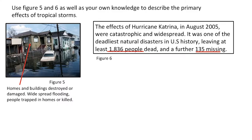Let's take a look at another question: 'Use figures 5 and 6 as well as your own knowledge to describe the primary effects of tropical storms.' Again, I've got a picture and in that picture I can see homes and buildings have been destroyed or damaged, there's widespread flooding, and people will be trapped in homes or killed. The article states the effects of Hurricane Katrina in August 2005 were catastrophic and widespread. It was one of the deadliest natural disasters in US history, leaving at least 1,836 people dead and a further 135 missing. I've got primary effects from the photograph — flooding and damage — and from the newspaper article, nearly 2,000 people dead and over 130 people missing. Let's add in some of our own knowledge.